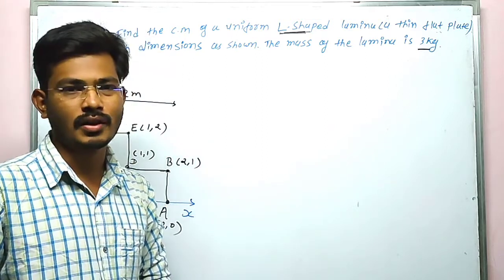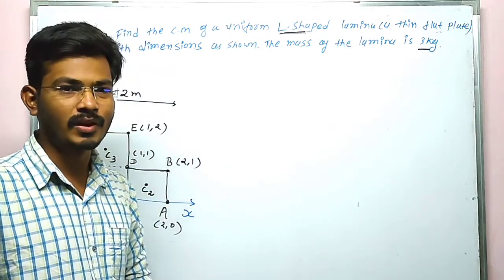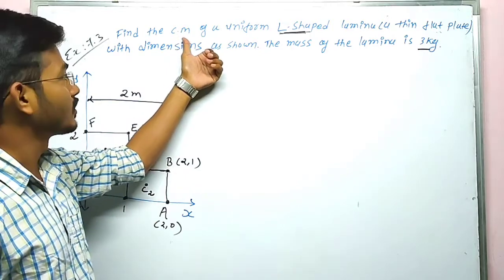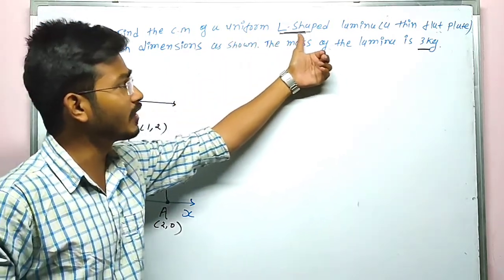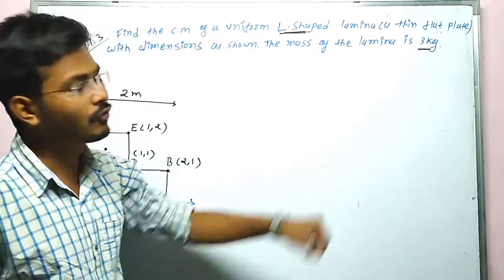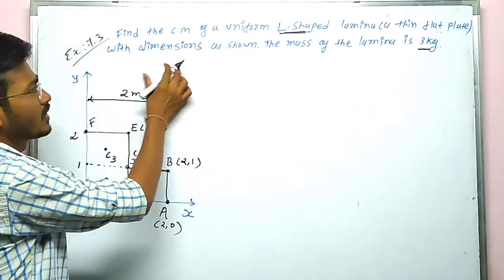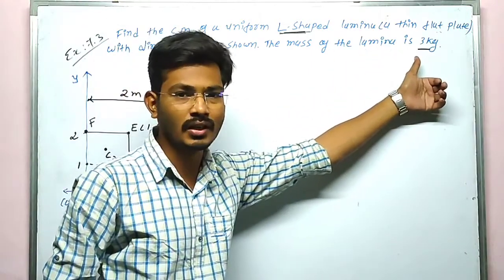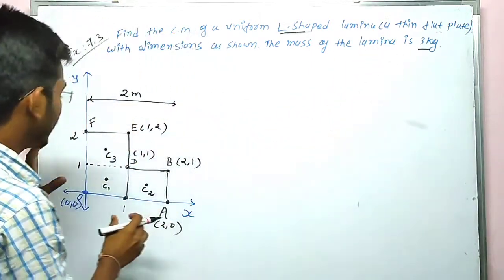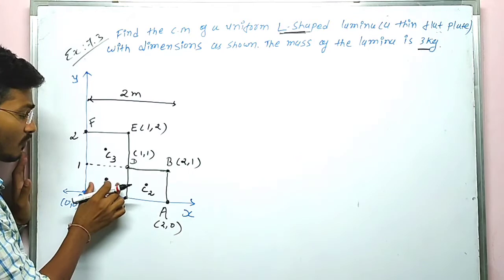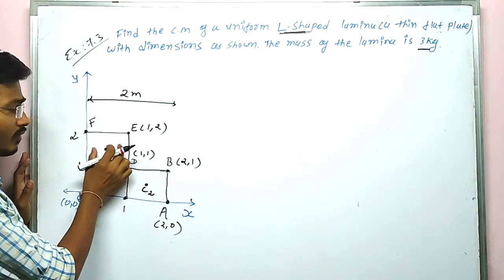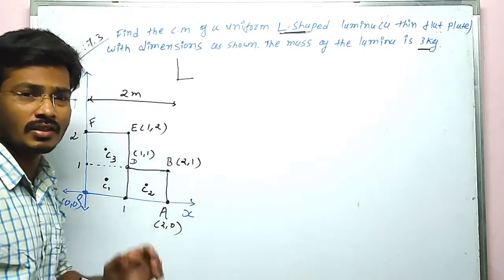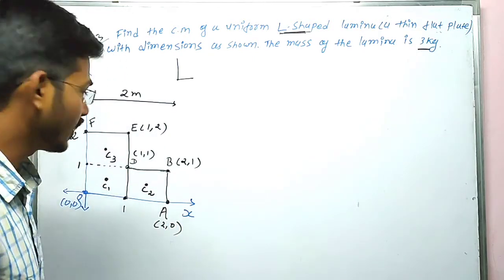Good morning, my dear students. In example number 7.3, we have to find out the center of mass of a uniform L-shaped lamina. We have a thin flat plate with dimensions as shown in the figure, and the mass of the lamina is 3 kg. The figure shows the L-shape divided into parts — part one, part two, and part three — to find the center of mass.